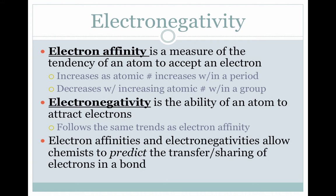Electronegativity — we've talked about this a couple of times — is the ability of an atom to attract electrons. It follows the same trend as electron affinity. For both of them, you're going to find the greatest electron affinity and electronegativity in the top right corner of the periodic table, and the least in the bottom left corner.